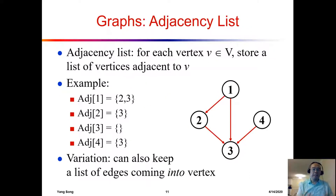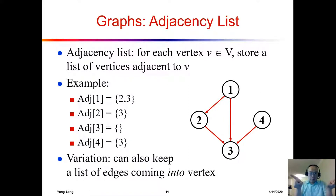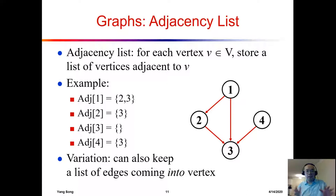The next choice we have is the adjacency list. Using the same graph with four nodes, for each node we want to record what edges are available going out to other nodes. For example, adjacency list index 1 stores where node one can go — node two and node three. Node two can go to node three, node three can go nowhere, and node four can go to node three.